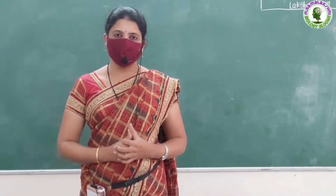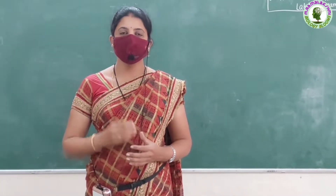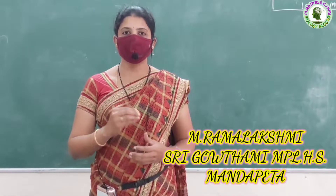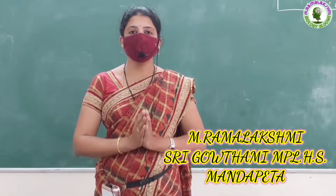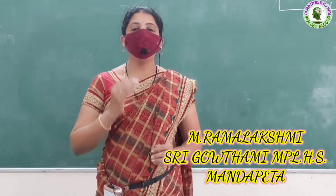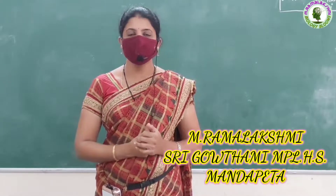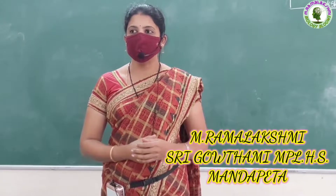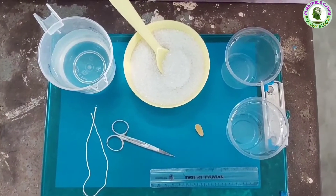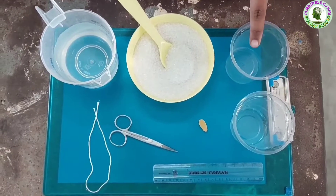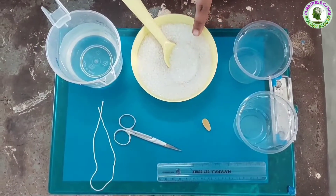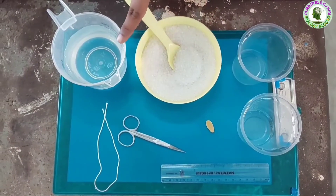Children, today we will do an activity to observe what will happen if we keep a substance in a more concentrated solution than it, and in a less concentrated solution than it. To do this activity, Madhuri and Padma, come here. We need two glasses, dry kismis, sugar, water.